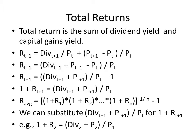So we can put all that together and get the third line, which is Div t+1 plus P t+1 minus P sub t divided by P sub t.